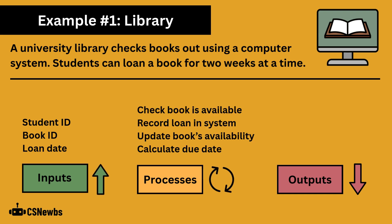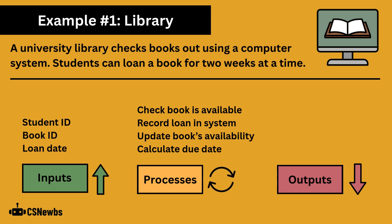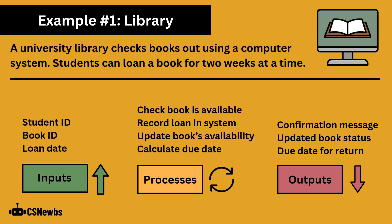Processes in this scenario could be checking if a book is available, recording the loan in the system, updating the book's availability and calculating the due date for it to be returned. And outputs include a confirmation message, the updated book status and a due date for the book's return.